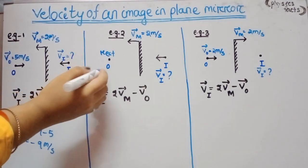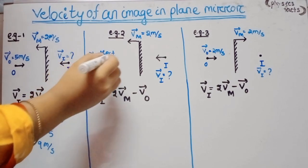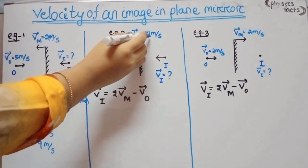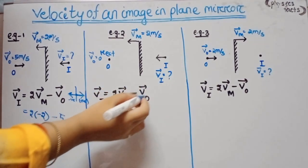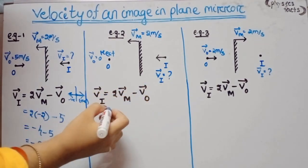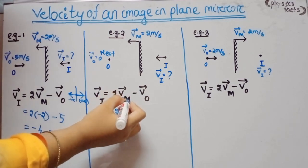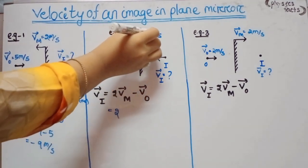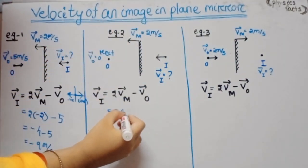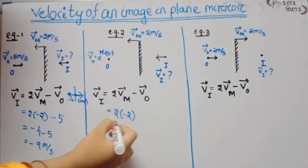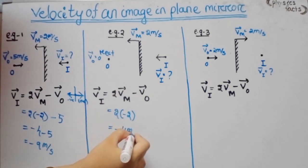Example: Object is at rest (Vo = 0), mirror moves at 2 m/s in the opposite direction (Vm = -2). Vi = 2(-2) - 0 = -4 m/s. The image moves at 4 m/s in the opposite direction.